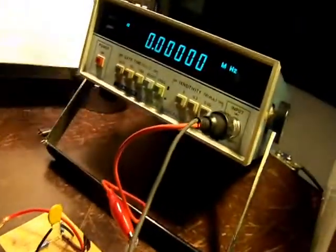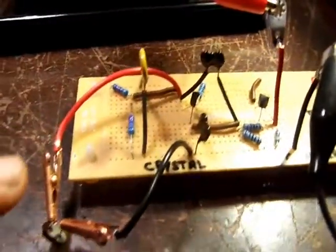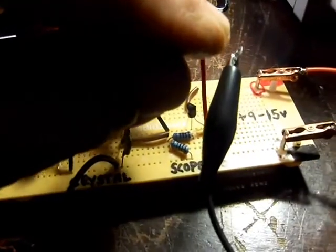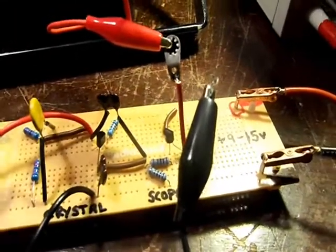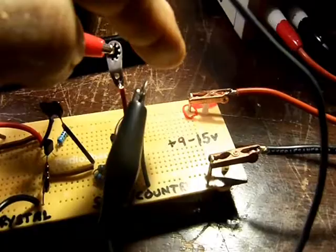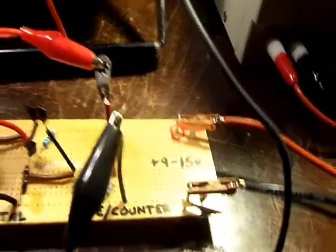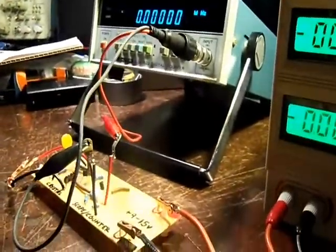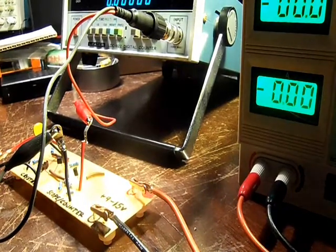Here's the board - here's my crystal socket, a couple of alligator clip connections to get a reading. Use a frequency counter, and you have connections for the DC power. So we have a 10 megahertz crystal hooked up and I'll turn the voltage up.